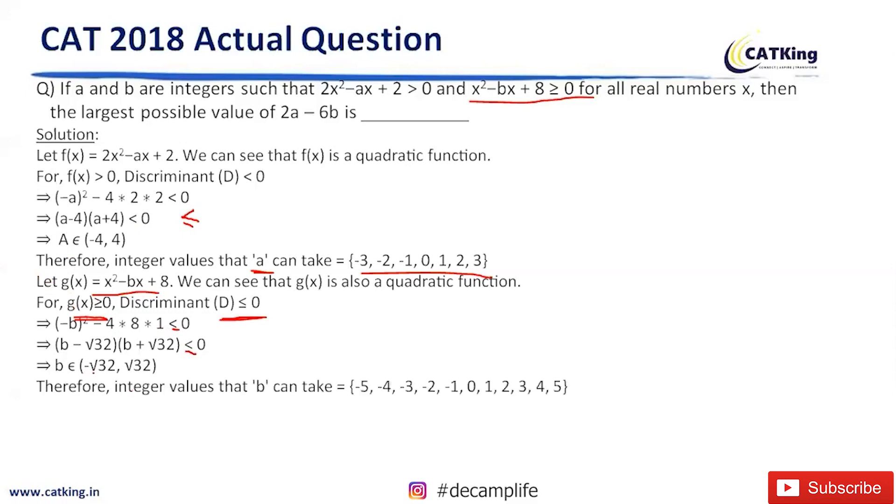So now this will be equal to... So B belongs to -√32 and √32. We can take values from -5.